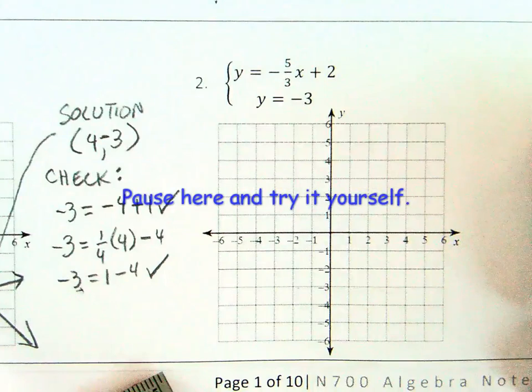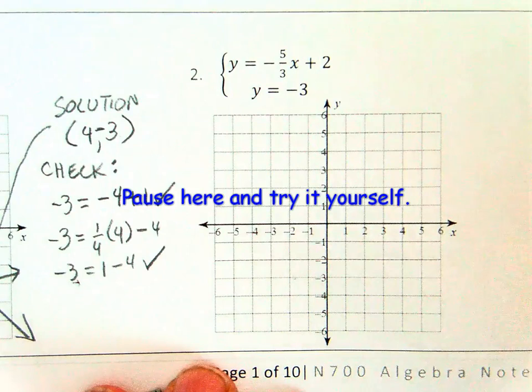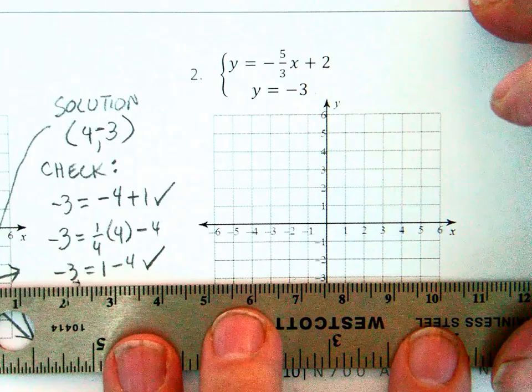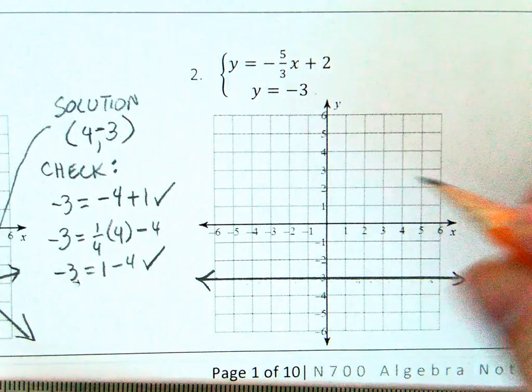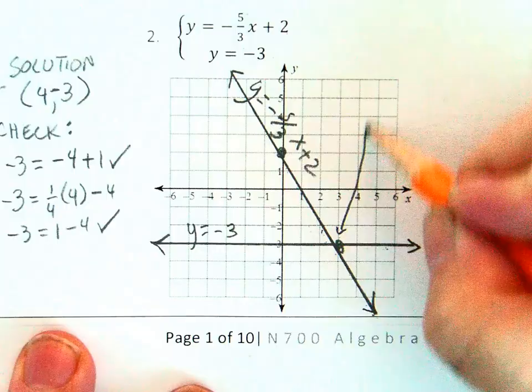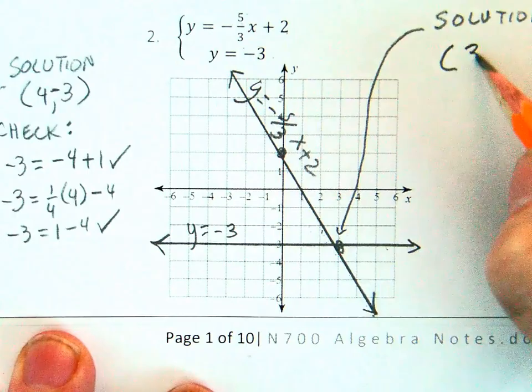Here is another example. Pause the video now and try this one yourself before continuing. y equals negative 3 is a horizontal line at negative 3. The other line has a y-intercept at 2 and a negative slope of 5 over 3. The solution is at 3, negative 3.